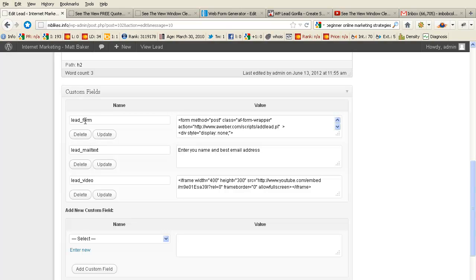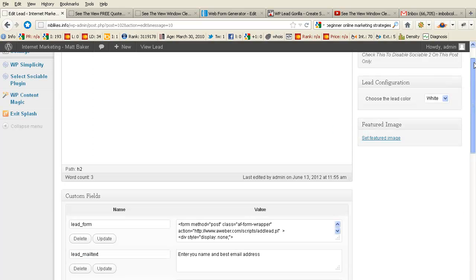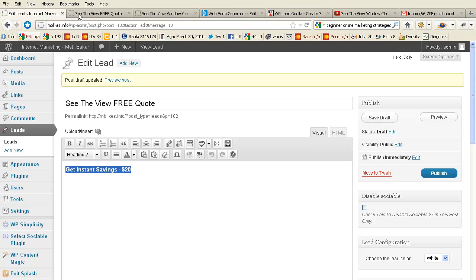At the bottom, you'll have custom fields that drop down for the lead form. That's your autoresponder form, the mail text, which is enter your name, best email address, or whatever call to action you want to put in. If you want to add a video, you can just use the lead video. You simply use these drop-downs, add the information, and then when you save it, this is the result.